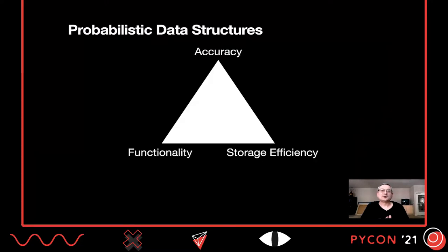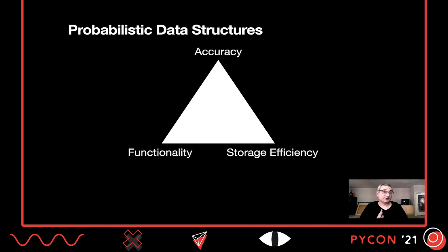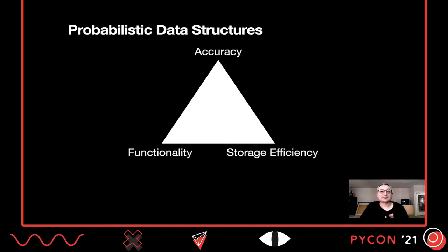This is where probabilistic data structures come in. These are a family of data structures that make some tradeoffs. Rather than being completely accurate, they trade off accuracy for storage efficiency — we can save a lot of memory by giving up a bit of accuracy. We might also trade off some functionality; we can save memory by not storing the data itself, which means we can no longer get a list back of what sheep we've seen, but we can still determine whether we've seen a sheep with reasonable accuracy.